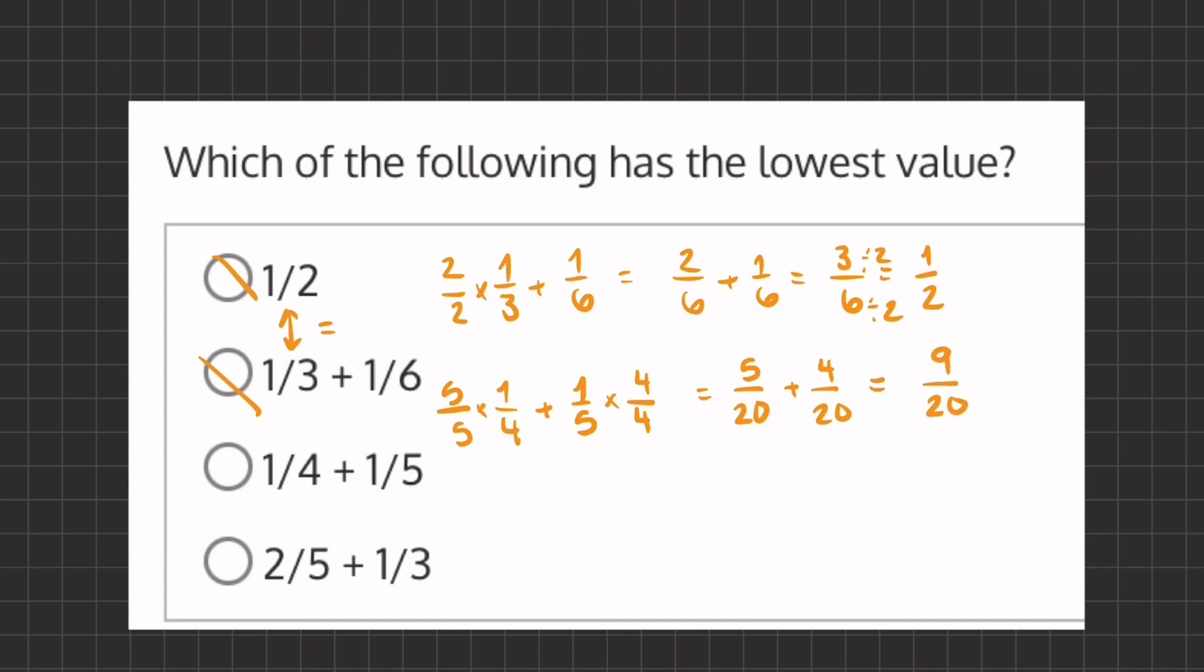We'll get our new equation to be five over 20 plus four over 20. Now when we add these we'll get nine over 20, which is a bit less than half because half of 20 would be 10 over 20. So let's keep this one in mind.